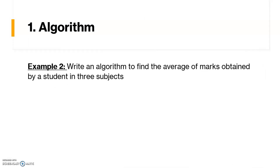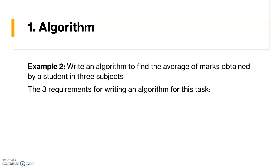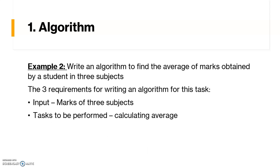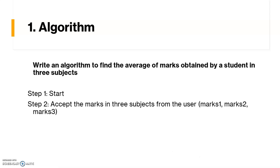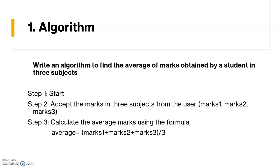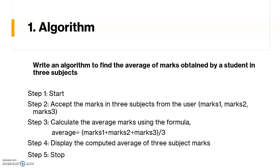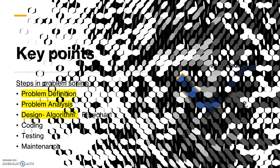Let us take one more example: writing an algorithm to find the average marks obtained by a student in three subjects. The input requires three marks; the task is calculating the average; and the expected output is the average of the marks. The algorithm is: Step 1: Start. Step 2: Accept marks in three subjects — marks1, marks2, marks3. Step 3: Calculate the average using the formula. Step 4: Display the average value. Step 5: Stop.